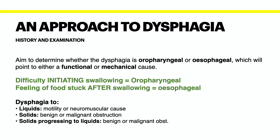Finally, does the patient have a history of radiation therapy or a history of caustic ingestion? And of course, carry out relevant histories including things like smoking, alcohol, a family history of malignancy, a history of stroke or Parkinson's which can cause functional defects, diet, infections, other things that can cause esophagitis, or a history of peptic ulcer disease as well.